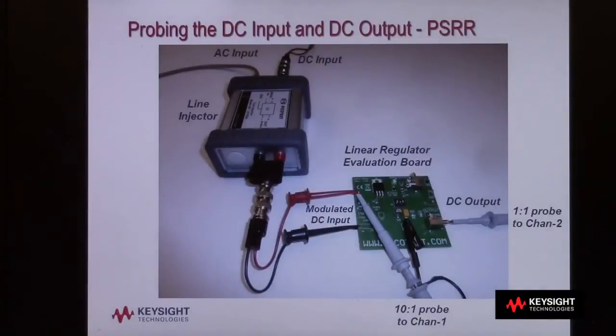For our demonstration, we'll be testing a DC to DC linear power supply evaluation board from Picotest. Our DC input, along with the AC input from the scope's generator, are connected to the input side of the line injector as you can see in the top of this photo. The output of the line injector, which will consist of a modulated DC signal, is connected to the DC input of our linear DC to DC converter.